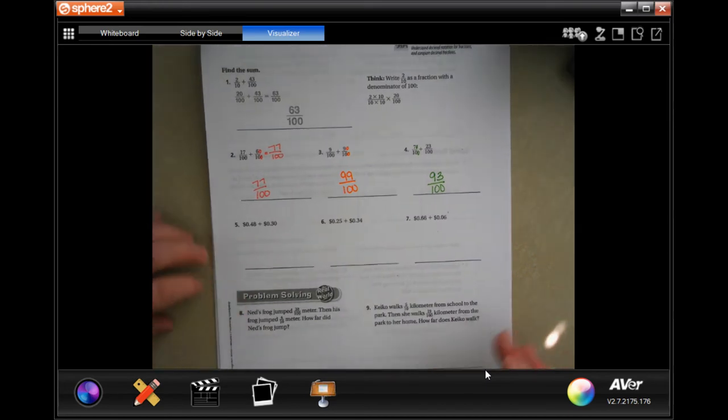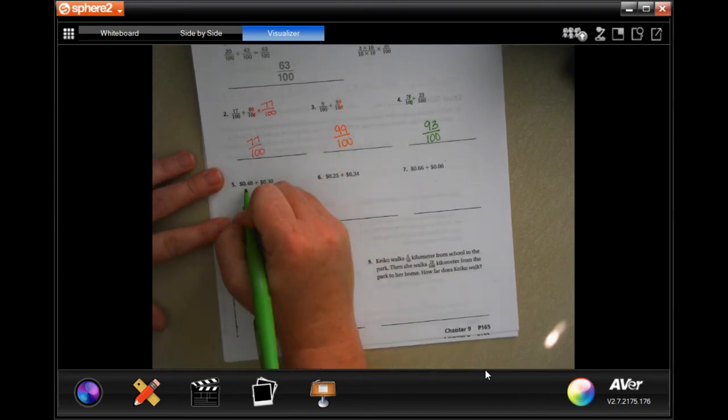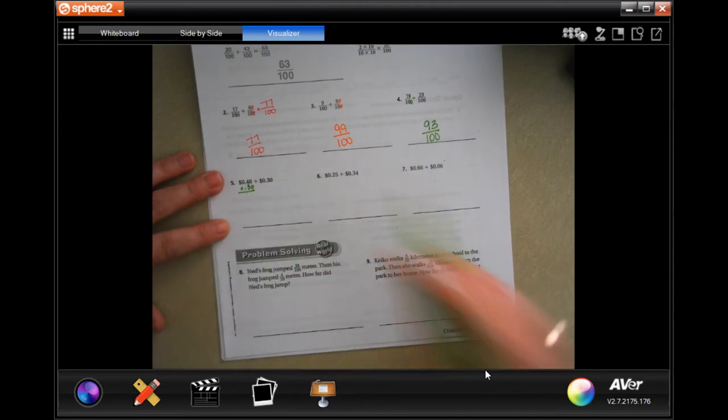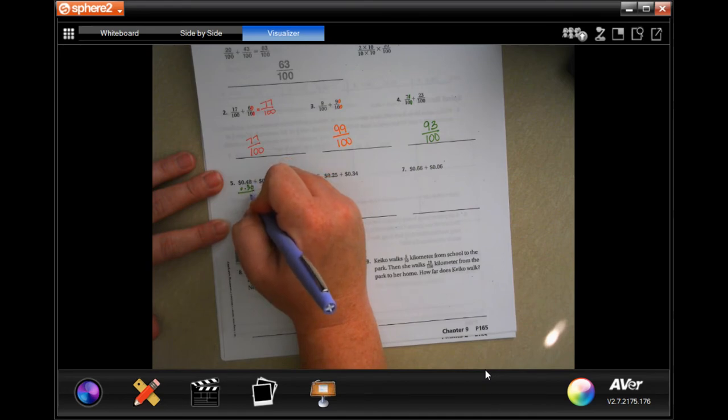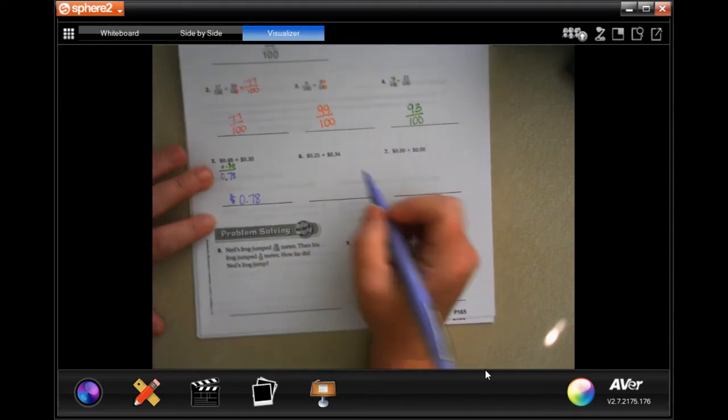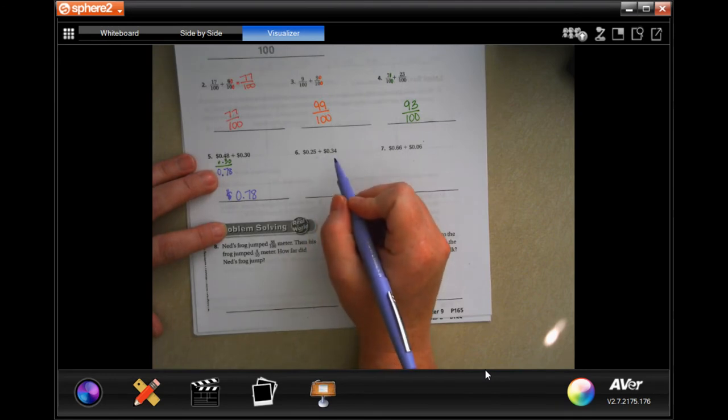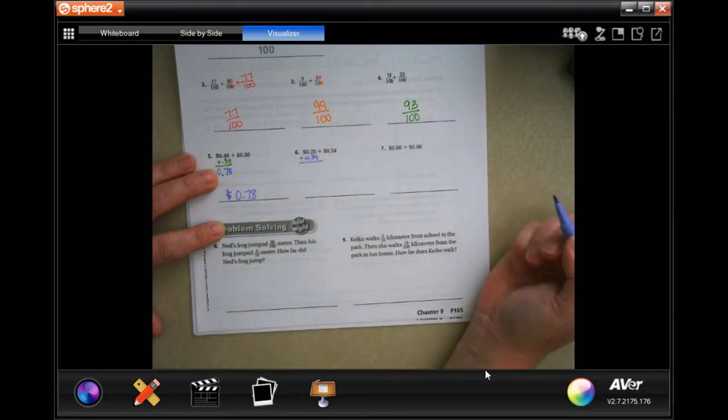I'm going to show you guys how to do one of these and then we're going to do the same thing. We're going to add straight down. 8 plus 0 is 8, 4 plus 3 is 7, drop our decimal. So, 0.78. You're literally adding them up, guys. That's all you're doing. Line up your decimal and add up your numbers.